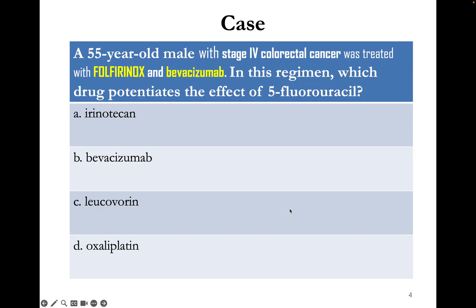Now let's look at a case. A 55-year-old male with colorectal cancer was treated with FOLFIRINOX and bevacizumab. The question is: which drug in this regimen potentiates the effect of 5-fluorouracil?